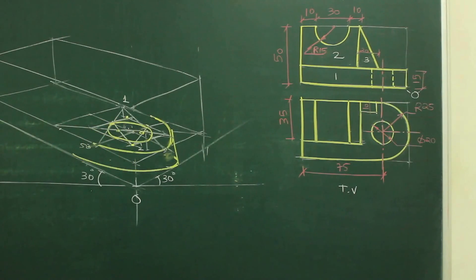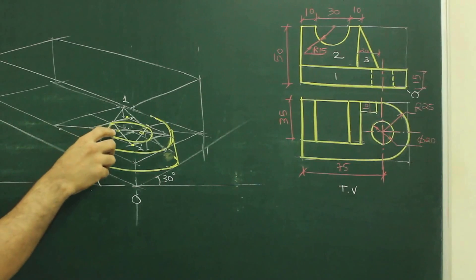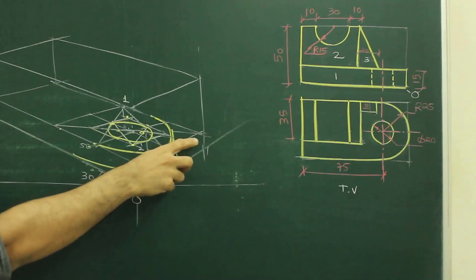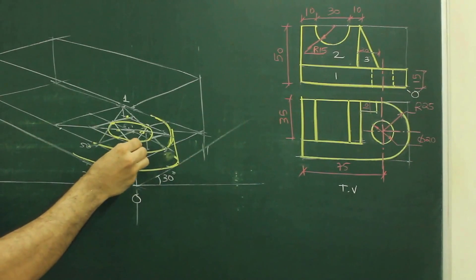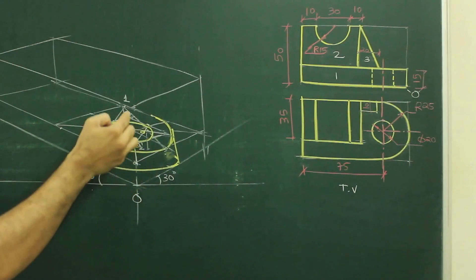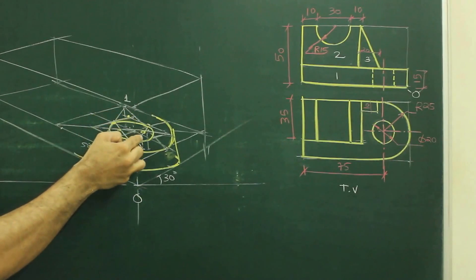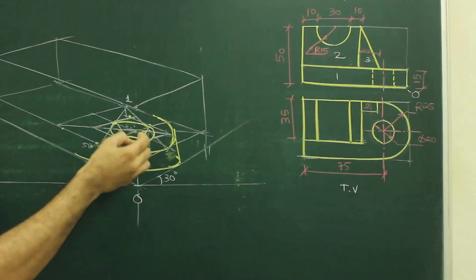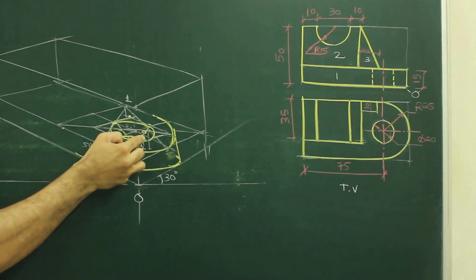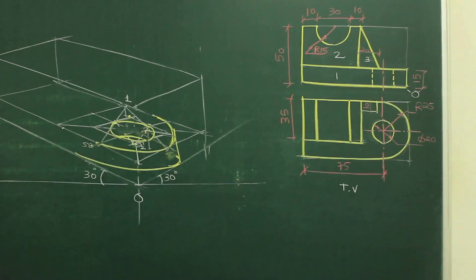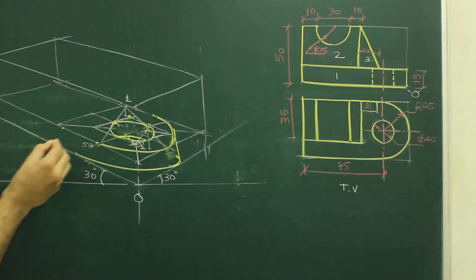Now, if you see in this view, there is a possibility that we might see the depth of this hole. So for that, what we need to see? We need to see the height — height is 15. So from this point, you go down by 15. Take this radius, go down by 15, and you draw arc. See this. Take this radius, go down by 15, and you draw arc. So you'll get the depth of the circle. So we are done with part 1.